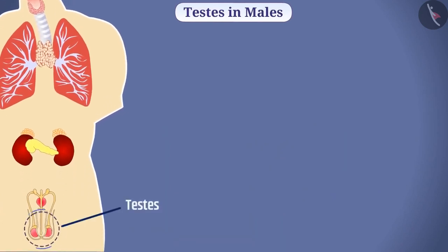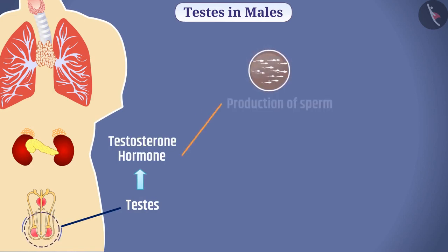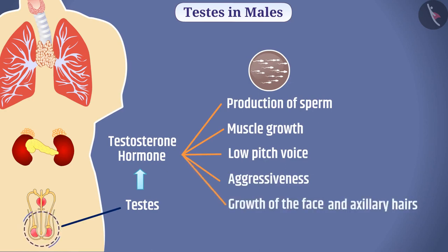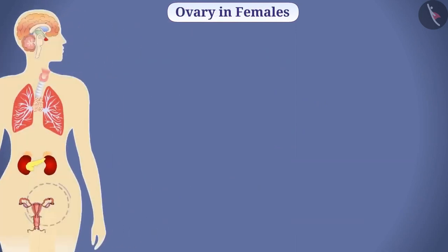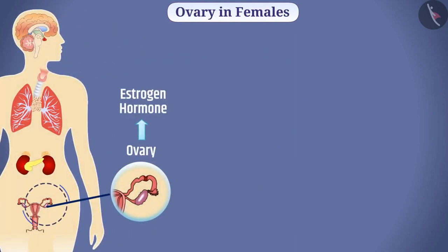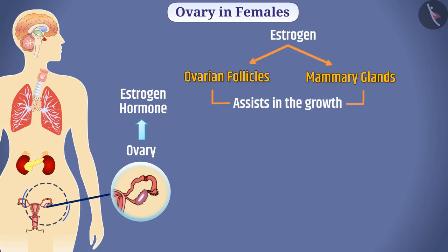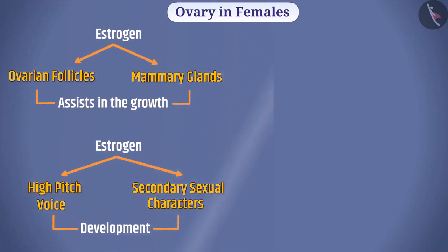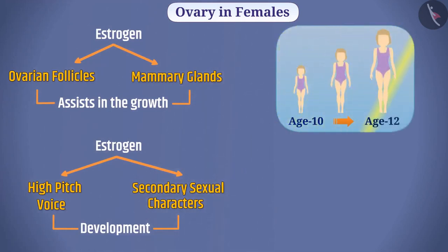In males, a pair of testes secretes testosterone hormone, which helps in sperm production and stimulates muscle growth, low-pitched voice, aggressiveness, and growth of facial and axillary hair. In females, a pair of ovaries secretes estrogen hormone, which assists in growth of ovarian follicles and mammary glands and causes development of high-pitched voice and secondary sexual characteristics in females.